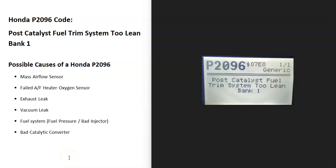Today I'm talking about a Honda with the P2096 code — what it is and how you go about fixing it. The P2096 code is a post-catalyst fuel trim system too lean, bank one.